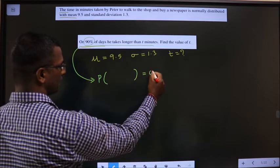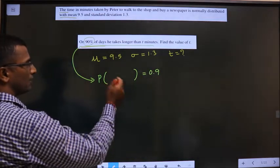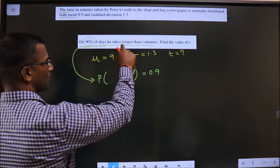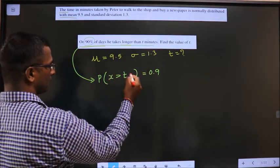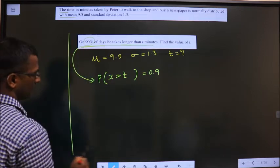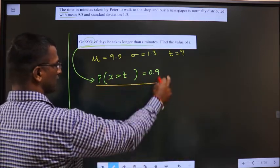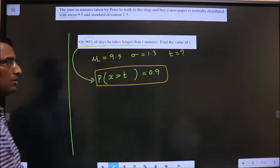So, which is 0.9. And what condition will you write here? Longer than T minutes means X greater than T. Clear? So, now by making use of this condition, I should find the value of T.